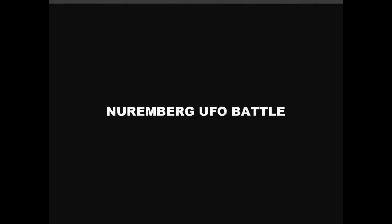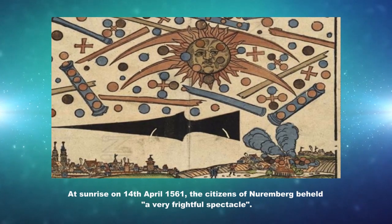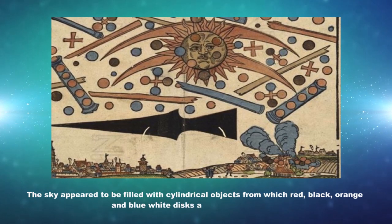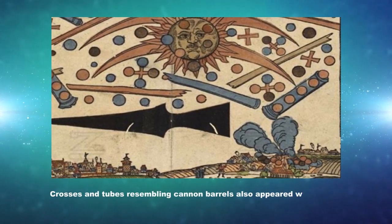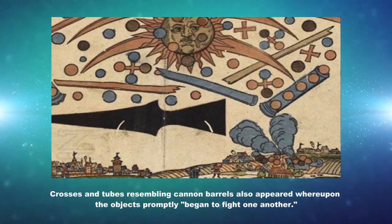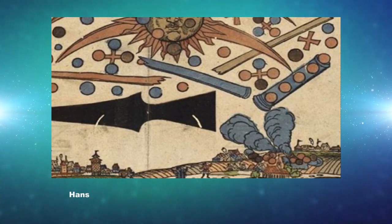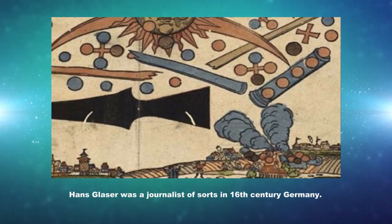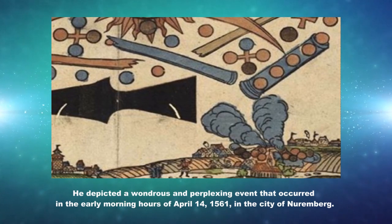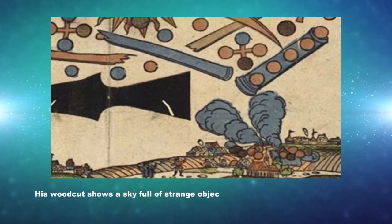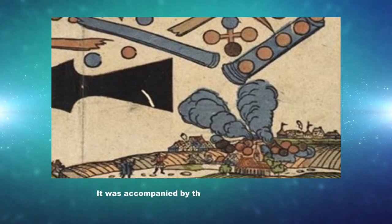Nuremberg UFO Battle: at sunrise on April 14, 1561, the citizens of Nuremberg beheld a very frightful spectacle. They appeared to be filled with cylindrical objects from which red, black, orange, and blue-white discs and globes emerged. Crosses and tubes resembling cannon barrels also appeared, whereupon the objects promptly began to fight one another. This event is depicted in the famous 16th-century woodcut by Hans Glaser, a journalist of sorts in 16th-century Germany. It depicted a wondrous and perplexing event that occurred in the early morning hours of April 14, 1561 in the city of Nuremberg. The woodcut shows a sky full of strange objects and smoke arising from the ground where some objects seem to have crashed. It was accompanied by the following description.